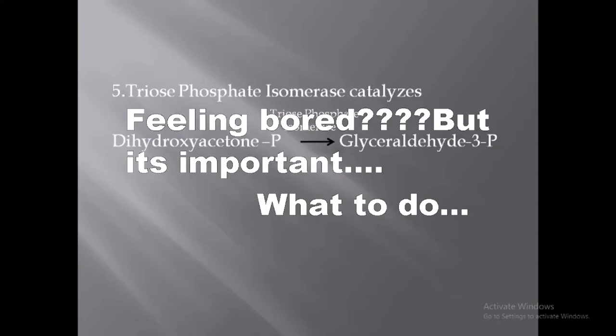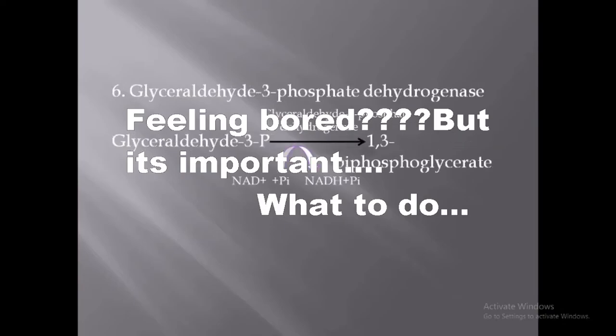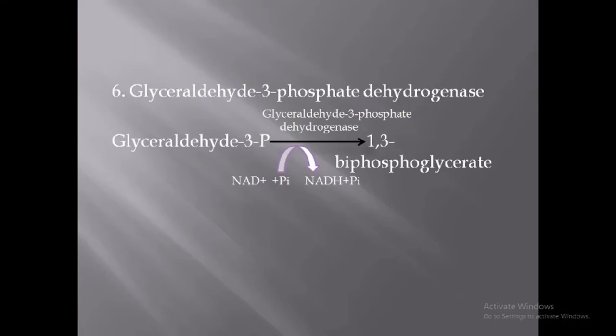In the sixth step, glyceraldehyde-3-phosphate is converted to 1,3-bisphosphoglycerate with the help of the enzyme glyceraldehyde-3-phosphate dehydrogenase. It is a tetrameric enzyme containing four identical polypeptides, and four active site groups are present on each polypeptide chain.